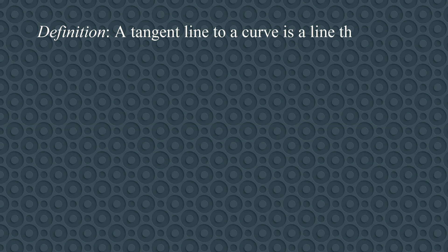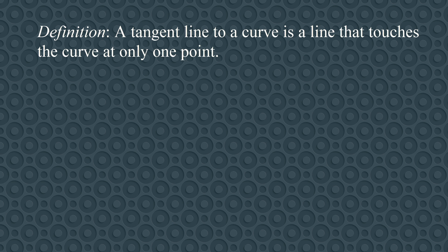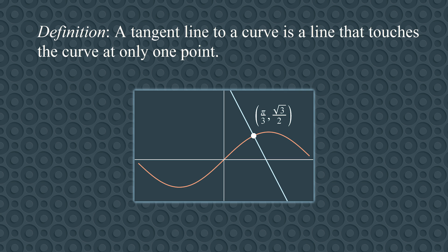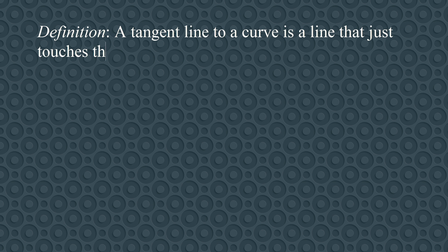A common definition you might hear is: a tangent line to a curve is a line that touches the curve at only one point. But this definition is wrong. This line touches the graph of the sine curve at only one point, but it isn't a tangent line. The problem here is that the line crosses the curve, rather than gradually approaching it before touching it at one point.